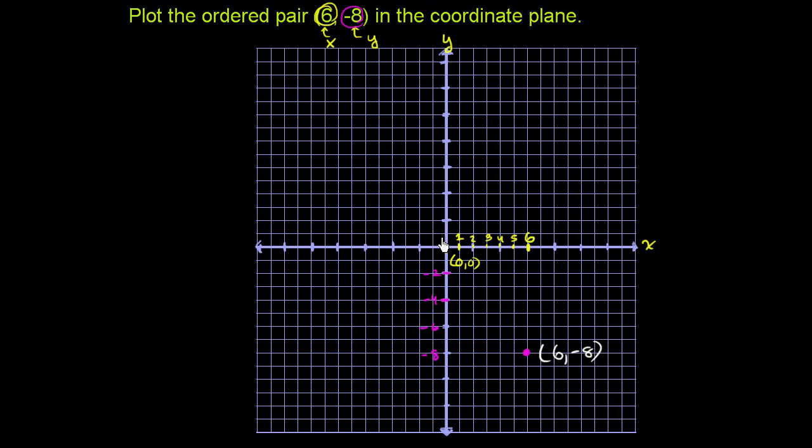You could also look at it this way. The x-coordinate is 6, so you move 6 there, and we're going to be along this line right over here. And then the y-coordinate is -8, so you go down to -8. We're going to be along this line over here, and the place that they intersect is this coordinate.